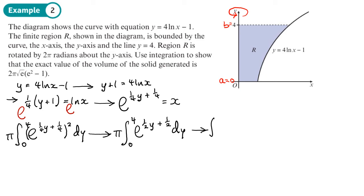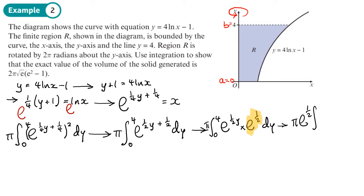That's the same as e to the (y/2) times by e to the (1/2) dy. Now, e to the half — that's just a constant, it's just a number, y is not in it. So let's take that to the other side. I end up with π e to the half — that's a constant — with limits 0 and 4, and all I'm left to integrate is e to the (y/2) dy.